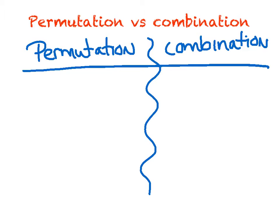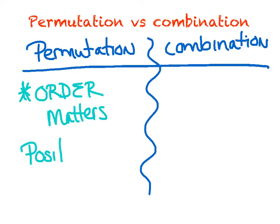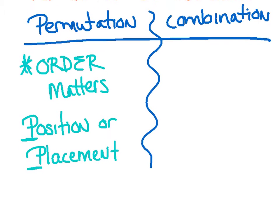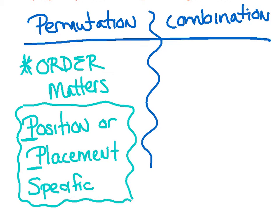So probably the most important thing is the order. In a permutation, the order matters. Now what exactly do I mean by that? Well, for example, if I just told you to pick four people to be on your team, the order doesn't matter at all how you pick them. So that would not be a permutation. Something where the order matters, they're going to use terms like position or placement. Notice these are all P words for permutation. Position, placement, and then being very, very specific is how I like to think of it.